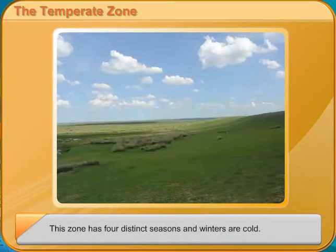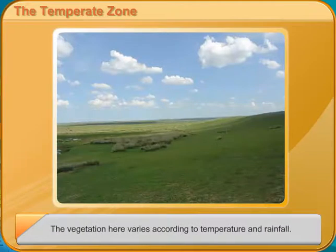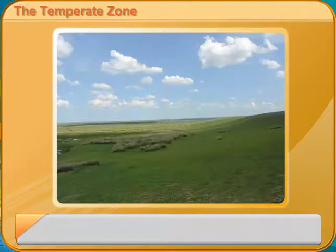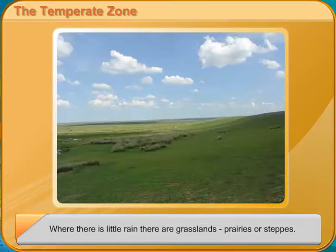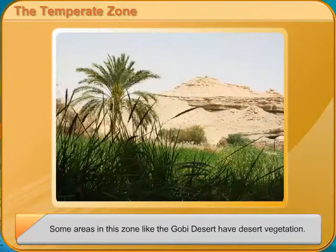Some areas in this zone, like the Gobi Desert, have desert vegetation. The wetter regions in this zone have coniferous forests with tall, straight, evergreen trees with needle-like leaves. Some of the regions near the Mediterranean Sea have Mediterranean vegetation of deciduous trees. The rest of the zone has mixed forests.